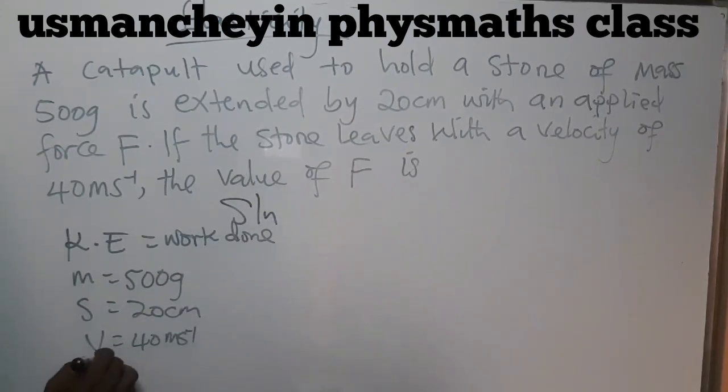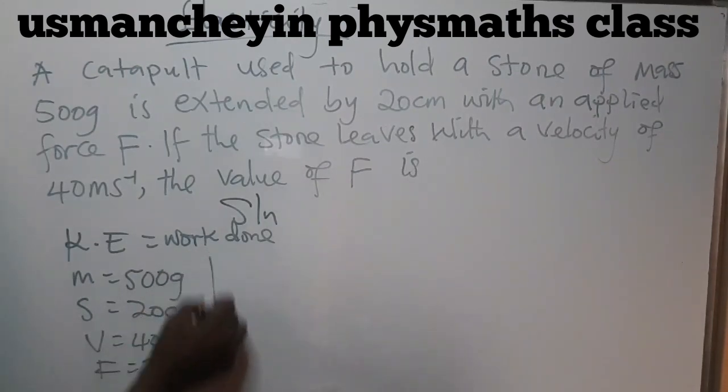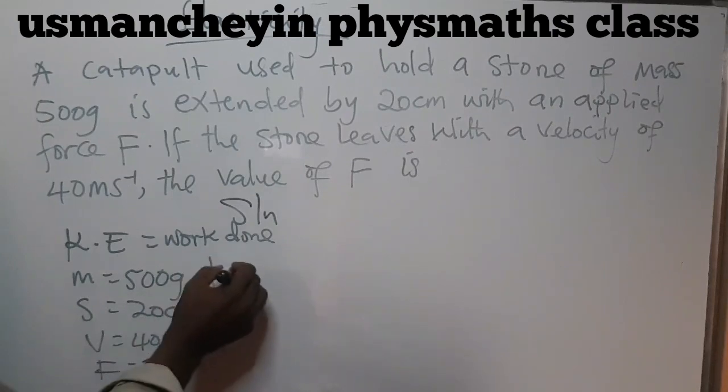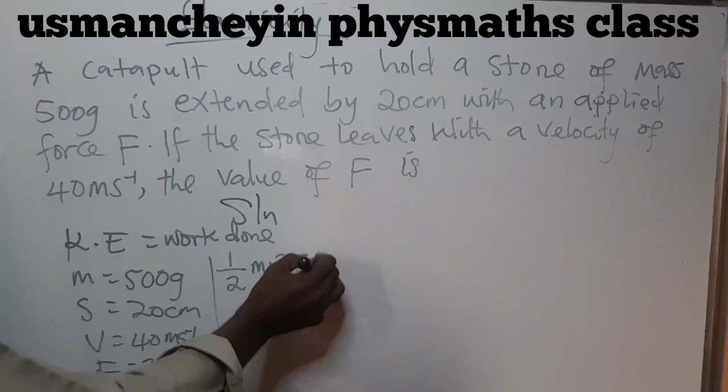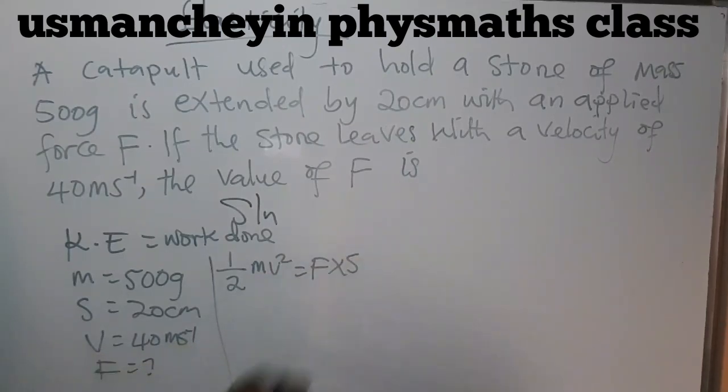Force is equal to question mark. So we apply the formula quickly. Kinetic energy, half mv squared, is equal to force times distance.